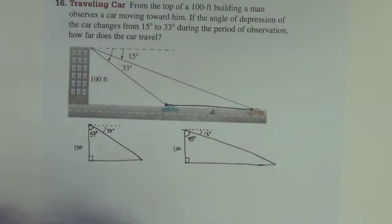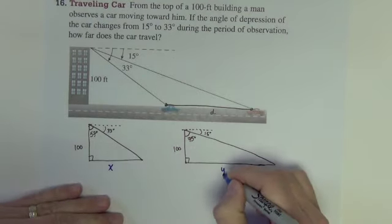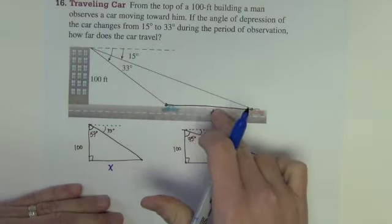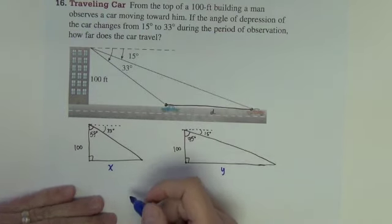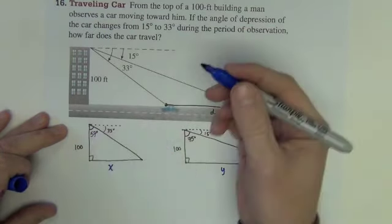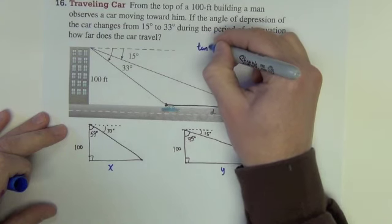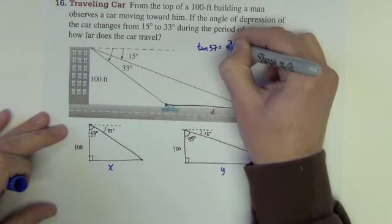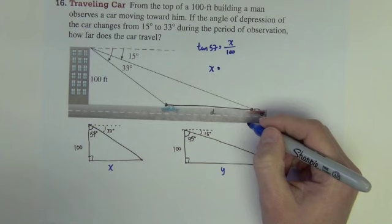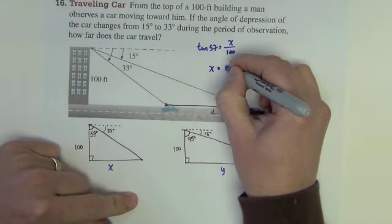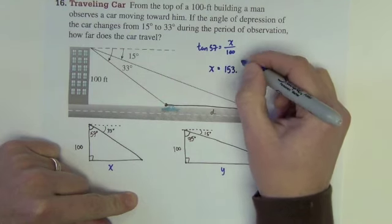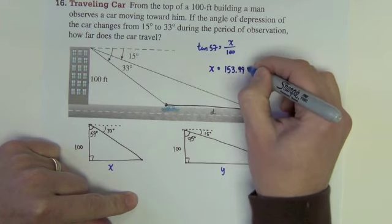Okay, so what we would like to do is find this distance, this distance, and just like in the tower problem from before, we are going to find these two distances and then find their difference and that will give us the distance that the car has traveled. So let's do that up here. From this angle, we are opposite over adjacent, so it's again tangent. Tangent of 57 equals opposite over adjacent, so I need to do 100 times the tangent of 57. I get 153.99 feet.